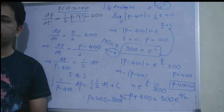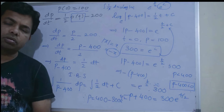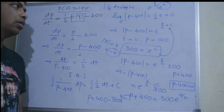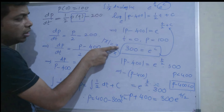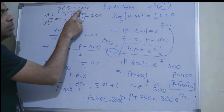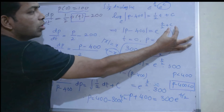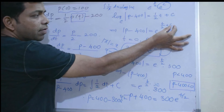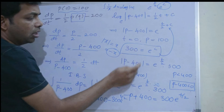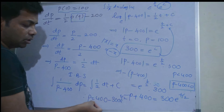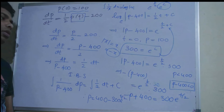So this is the population of the rabbits: p(t) = 400 - 300 e^(t/2). This is a simple problem based on the variable separable method — separate variables, integrate, then use the initial condition p(0) = 100 to find the arbitrary constant. Here e^c was replaced by 300, giving the final answer.